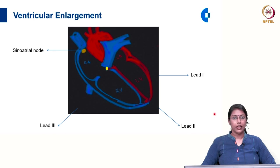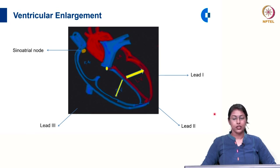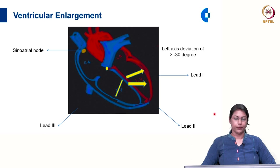In left ventricular enlargement, there is a stronger left ventricular vector which shifts the QRS axis anti-clockwise or leftward, resulting in left axis deviation of more than minus 30 degrees.